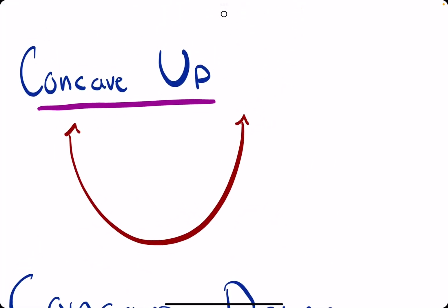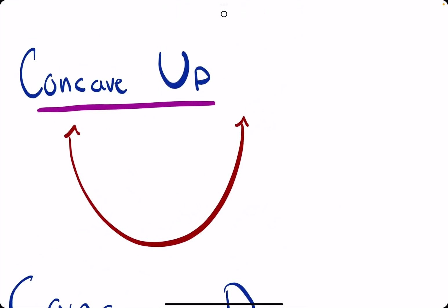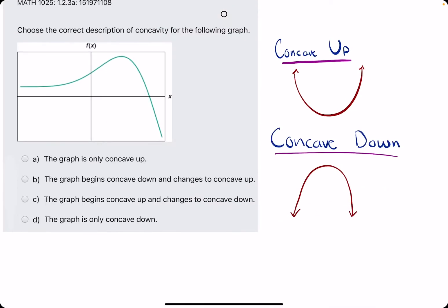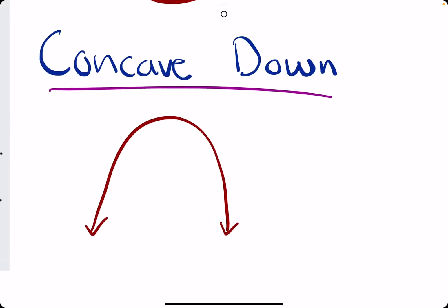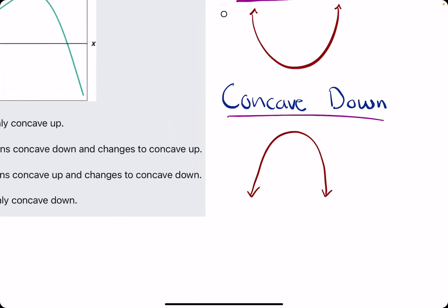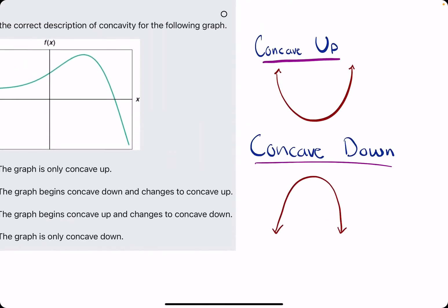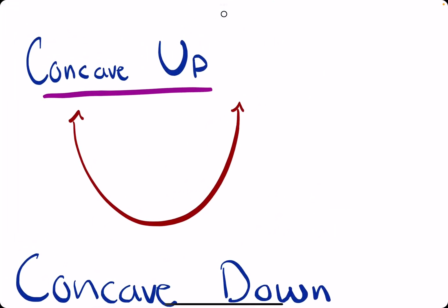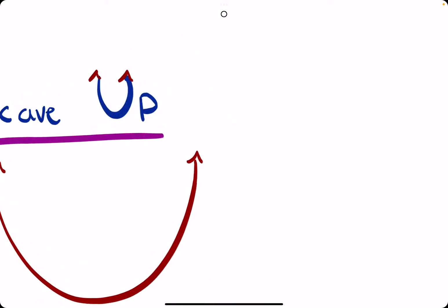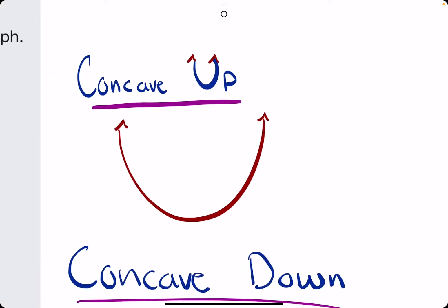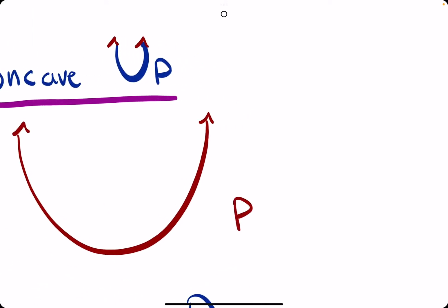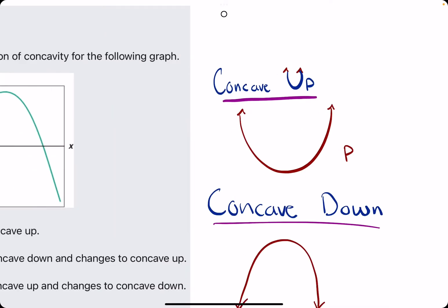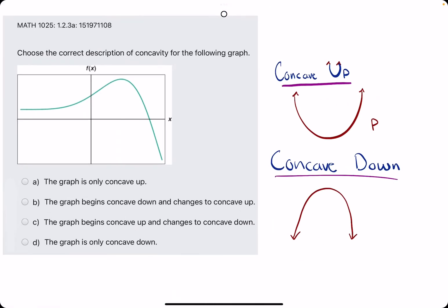Concave up is essentially a parabola that is opening up, and concave down is a parabola that is opening down. If it helps to remember it, concave up looks like a concave up curve — concave up, concave U. Maybe that's a little helpful.